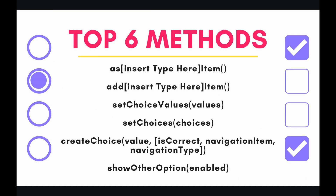The top six methods prepared for today are: as[Type]Item — used to typecast, for example, a list item using asListItem() or asMultipleChoiceItem(); add[Type]Item — such as addCheckboxItem(); setChoiceValues(); setChoices(); createChoice(); and finally showOtherOption(). Let's go into the code and have fun with some of these methods.